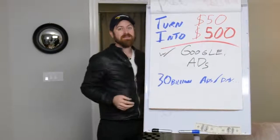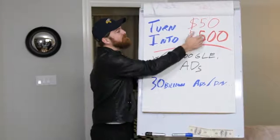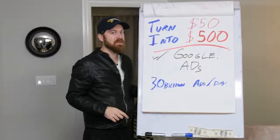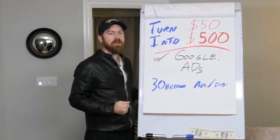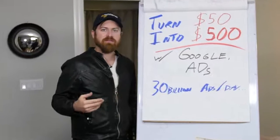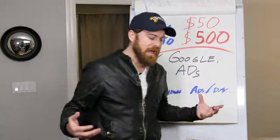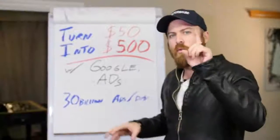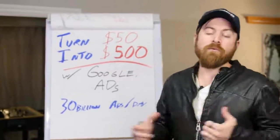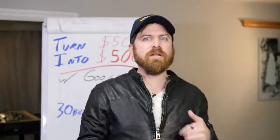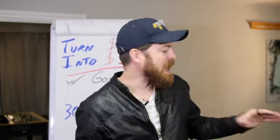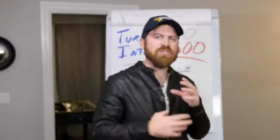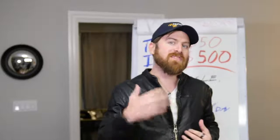My very first business was exactly this. I spent $5,000 a month to make $50,000 a month — that's how I quit my job and created an online income that allowed me to travel the world and buy property in Malibu. This is just the first step. There's a lot more: split testing, writing better headlines, analyzing data — all of that is covered in my six-week program, the Super Affiliate System.